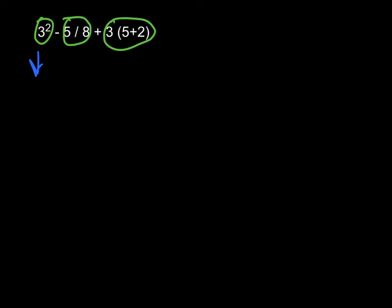3 squared is, remember it's the same as 3 times 3, not 3 times 2. That's going to give me 9. Carry down your subtraction. 5 divided by 8. I'm just going to write 5 eighths, even though I know it's the same thing. Carry down your addition symbol. And here's where it gets a little bit more interesting. We can do 3 times 7, which we know to do based upon what we've done in the past. Or we can do the distributive property and break it down to say 3 times 5 plus 3 times 2. I'm going to write it as 3 times 7 because I think that's going to be a little bit easier.